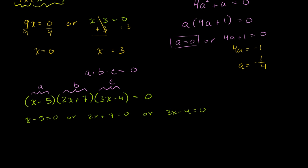Add 5 to both sides of this equation, and you get x is equal to 5. So that's one solution to this equation. Over here, subtract 7 from both sides. You get 2x is equal to negative 7. Divide both sides by 2. You get x is equal to negative 7 over 2. That's another solution. And then finally, add 4 to both sides of this equation. You get 3x is equal to 4. Divide both sides by 3. You get x is equal to 4 thirds.